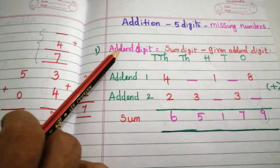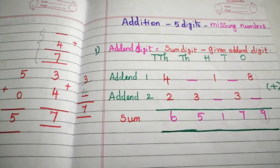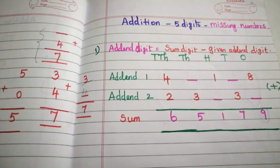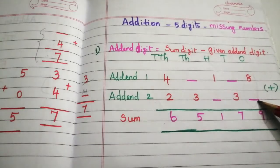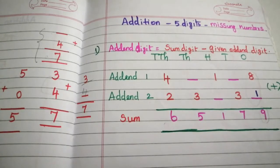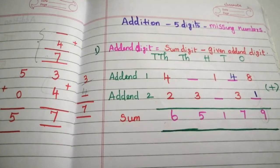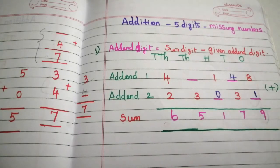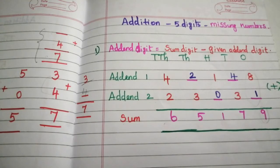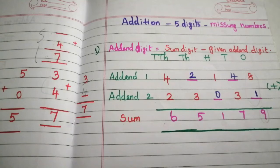Now we apply this to find the missing digits in this problem. We always start from the 1's place. Addend 2 is missing. So 9 minus 8 is 1, 7 minus 3 is 4, 1 minus 1 is 0, and 5 minus 3 is 2. So our missing digits are 2, 4, 0, 1.